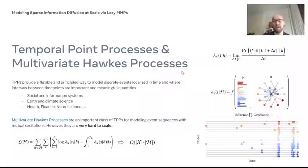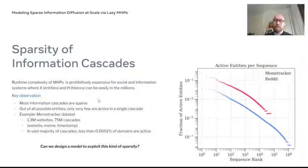The runtime complexity of standard maximum likelihood estimation for this class of models is of the order of X times H, where X refers to the set of entities in your data and H refers to the number of event sequences. This runtime complexity is far too expensive for modeling large information diffusion processes as they're common in social information systems, where the number of entities and sequences can easily be in the millions.